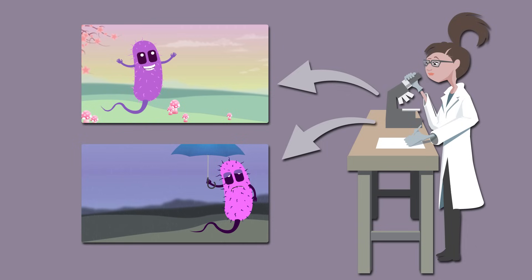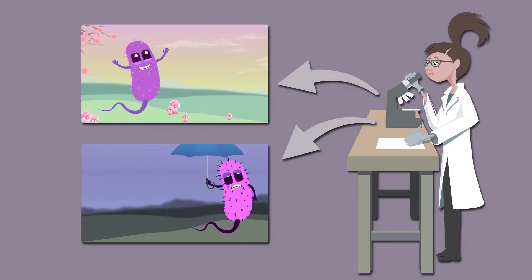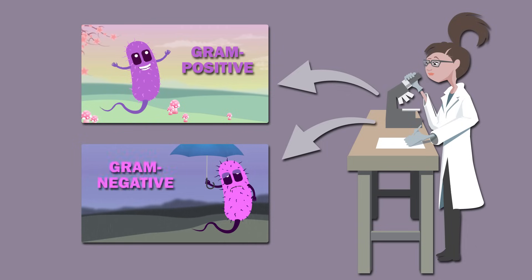Bacteria can be classified based on their reaction to the gram stain, which identifies them as gram-positive or gram-negative, based on the chemical and physical properties of their cell walls.